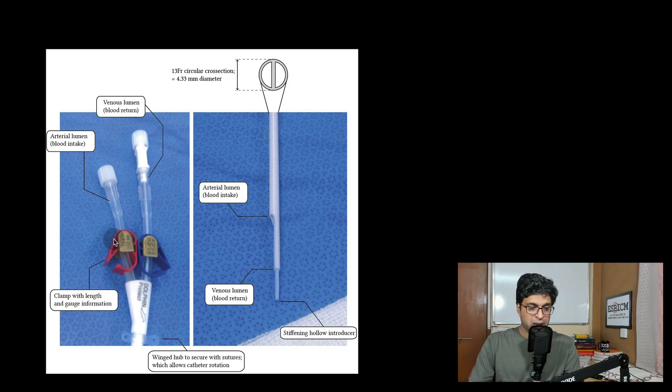So now, here is your dialysis catheter. You can see this is the red port, this is the arterial lumen, means blood we are taking from the body towards the dialysis machine, then here it gets filtered and then it comes back to the return port, means the blue port.